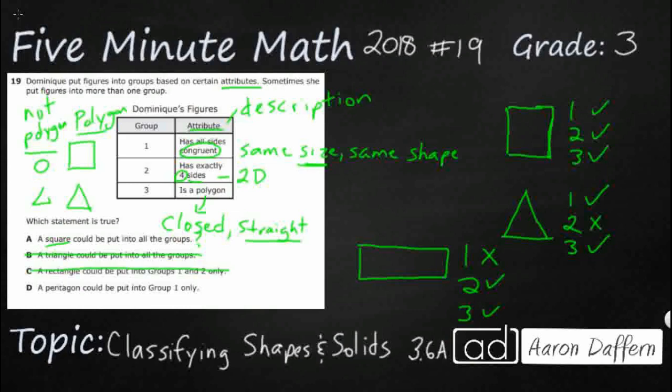And then a pentagon can be put into group one only. So here's a pentagon. Think of like a home base when you play baseball. It's got five sides. So has all sides congruent? Well, you can draw a regular pentagon. I didn't quite draw them, but you can make one with all equal sides. This bottom side is a little too long. Does it have exactly four sides? No, which is good because it doesn't say group two. But then look, this is a polygon. It is a polygon.